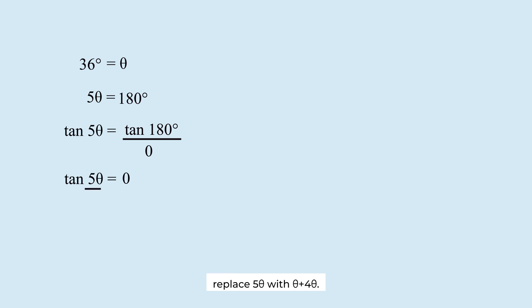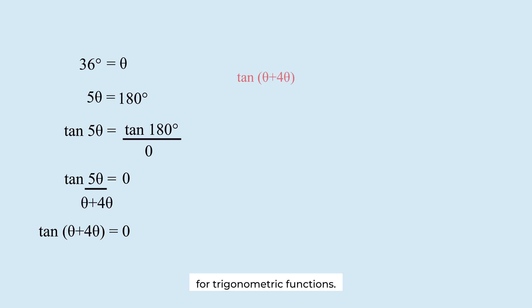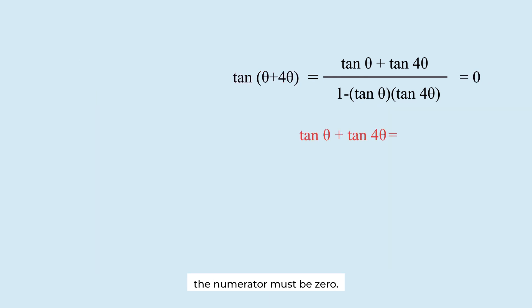Replace 5 theta with theta plus 4 theta. We apply the addition formula for trigonometric functions. Since this value equals 0, the numerator must be 0.